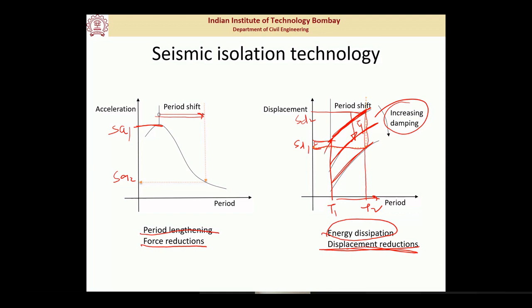That is why at many places seismic isolation is studied as part of seismic response control or seismic control of structures. There are other technologies involved in seismic control as well, like viscous dampers and tuned mass dampers. Seismic response control means applying technologies so that the response of the structure can be controlled to a desired value.